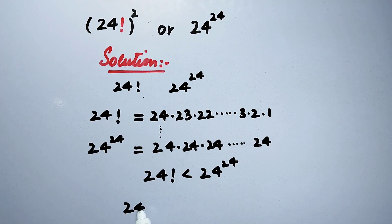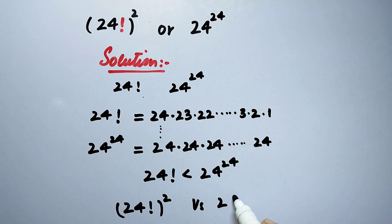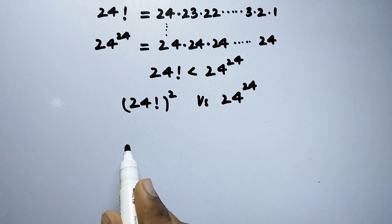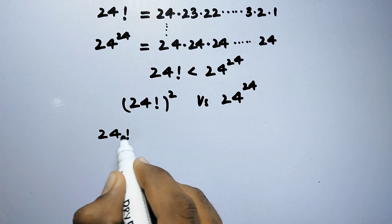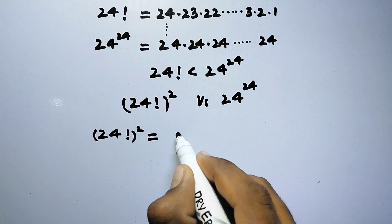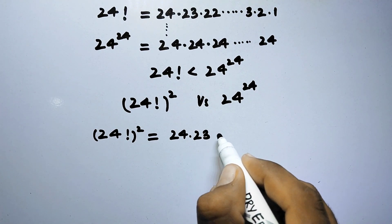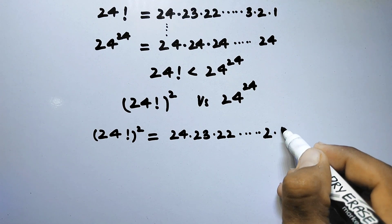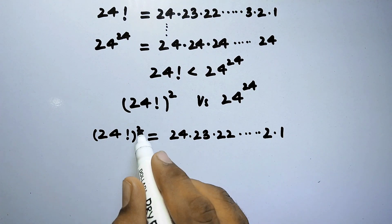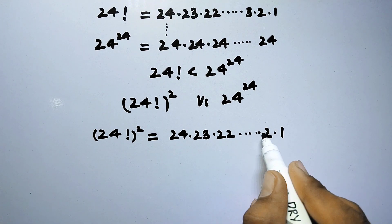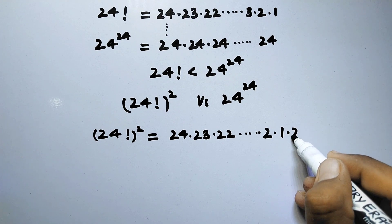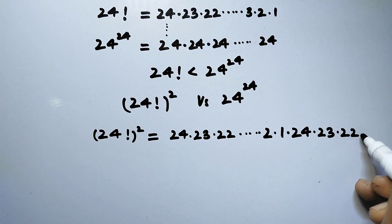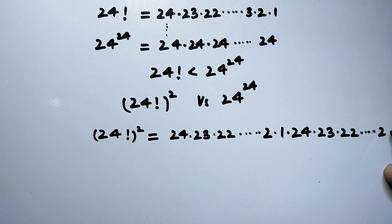So now we compare 24 factorial squared versus 24 to the power 24. We can expand 24 factorial squared as two copies of the factorial multiplied together: 24 times 23 times 22 down to 2 times 1, multiplied by 24 times 23 times 22 down to 2 times 1.